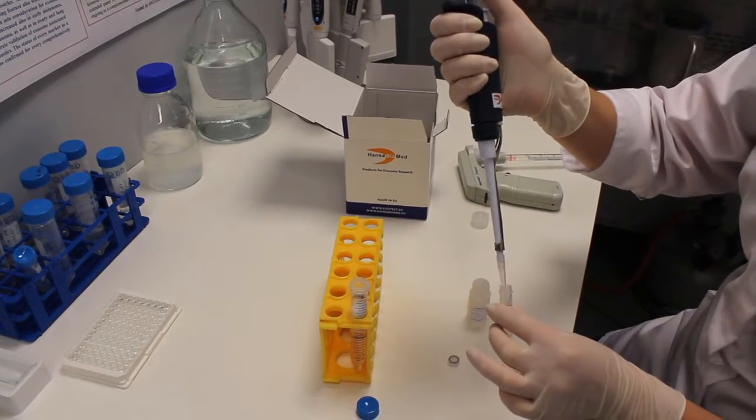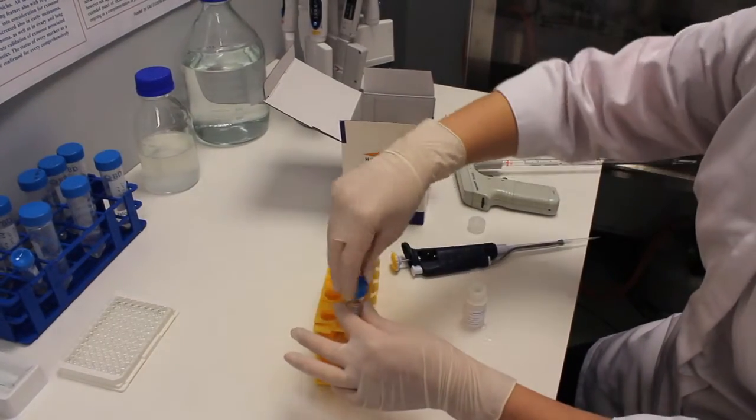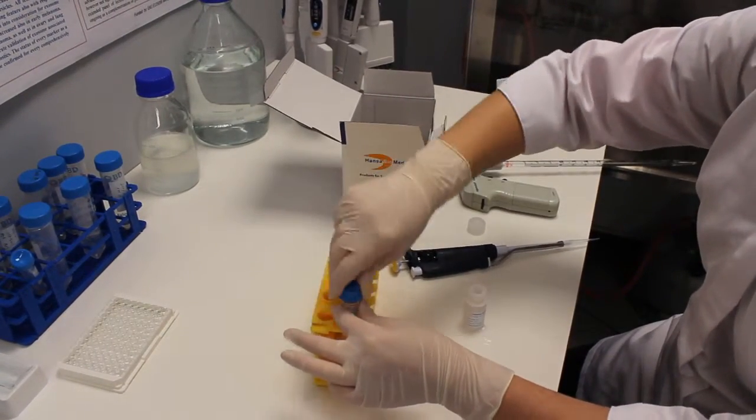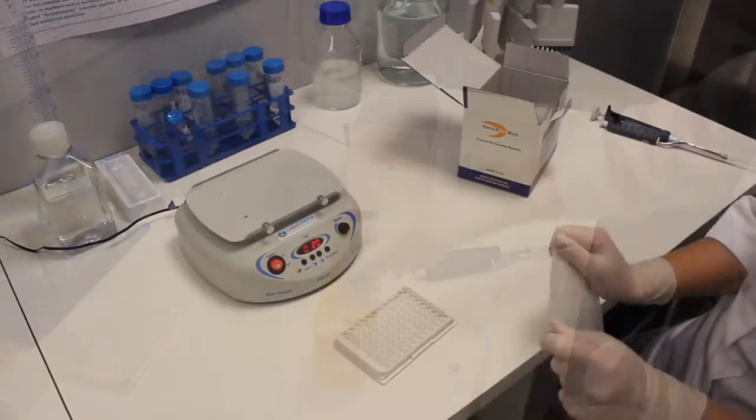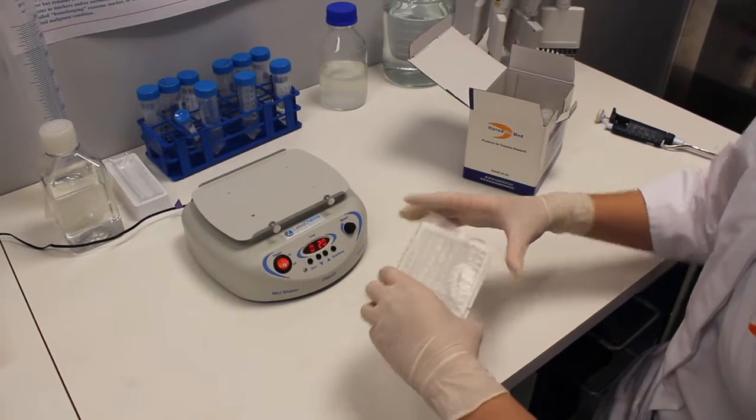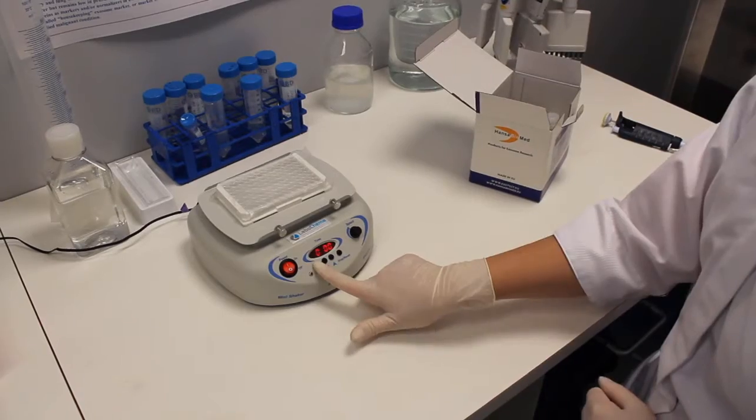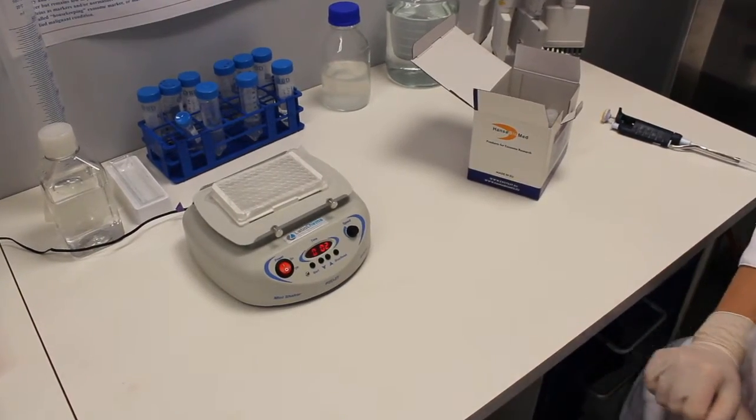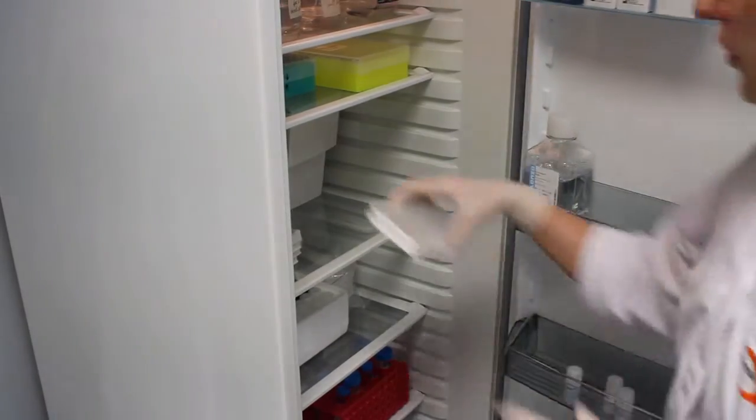Add 100 microliters of diluted primary antibody per well. Seal the plate with parafilm and incubate at room temperature while shaking for 20 minutes. Then incubate at plus 4 degrees for 2 hours.